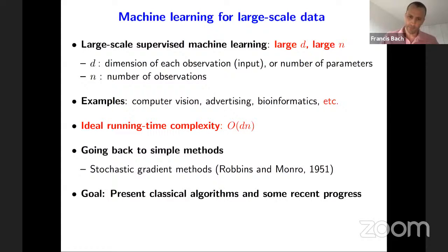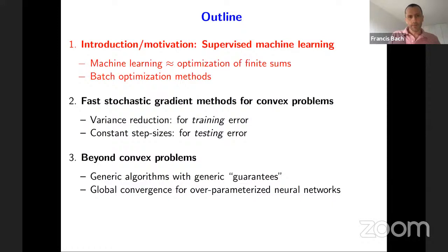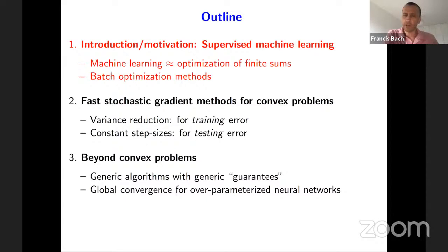One core message is that we're going to go back to very simple methods — simple like stochastic gradient techniques that date back to the 1950s. This is a very important idea in optimization and many of the techniques we use today end up being very similar. The goal is to present both the classics and some recent progress. In terms of outline for the two lectures, this will be divided into three parts. The first part is an introduction covering classical optimization techniques.